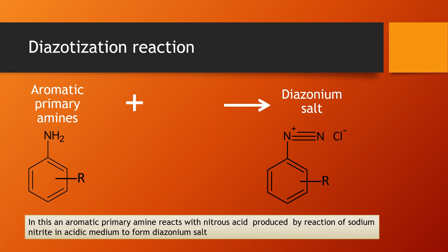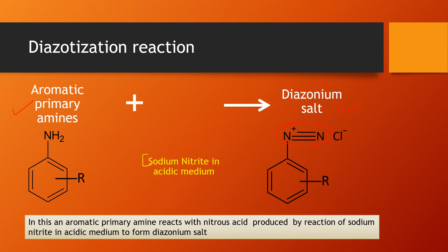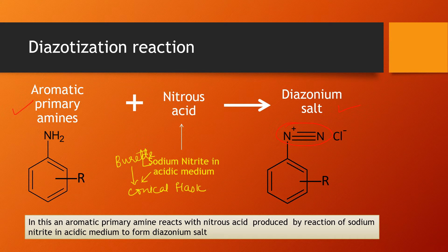In this diazotization reaction, aromatic primary amines are converted to their diazonium salts. This is done with the help of sodium nitrite. The sodium nitrite is taken in a burette and acidic conditions are maintained in the conical flask. When sodium nitrite falls from the burette into the conical flask where the acidic pH is maintained, it gets converted into nitrous acid. This nitrous acid then reacts with the primary aromatic amines and converts them into diazonium salts.